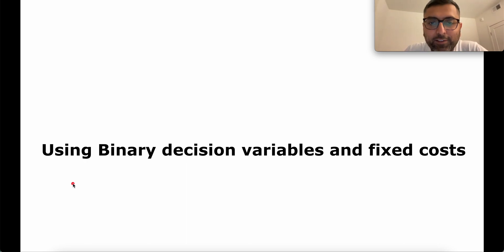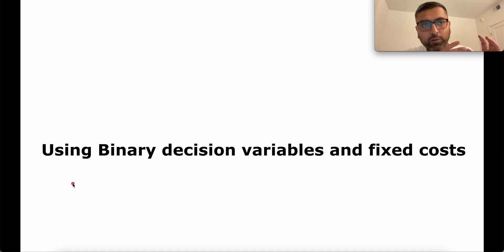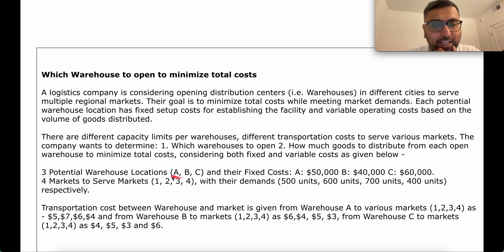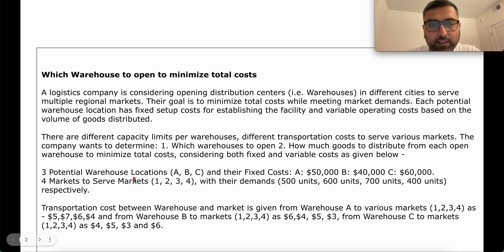Let us learn how to use binary decision variables to implement fixed costs in a linear optimization problem. To make it real, let's imagine you are Amazon and you're trying to figure out which warehouse to start and which warehouse not to start. You're serving different markets from those warehouses. For simplicity, you have three warehouses — location A, location B, location C — and each decision to turn on a warehouse comes with a fixed cost: warehouse A costs $50,000, warehouse B $40,000, warehouse C $60,000.